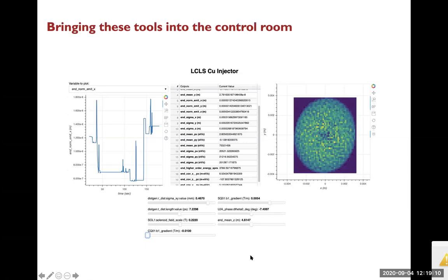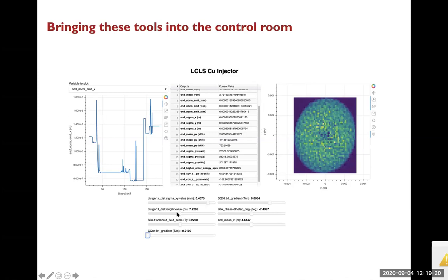We're incorporating some of these models into GUIs that can talk to the overarching control system, read back parameters, and give an operator an interface to play with different potential settings. This addresses the question of whether we can speed up models and put them on the machine, but it doesn't answer whether it's a good idea to use those models in optimization — because as soon as you're optimizing, you're potentially moving outside the training distribution.